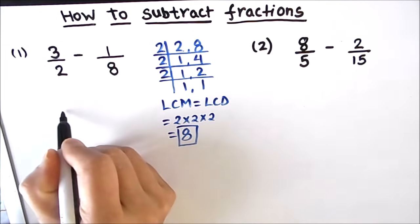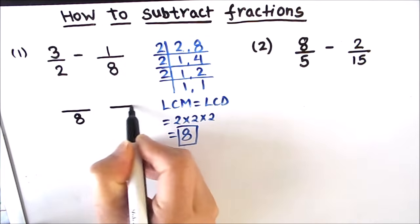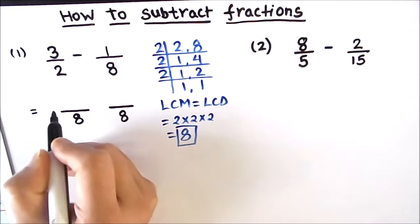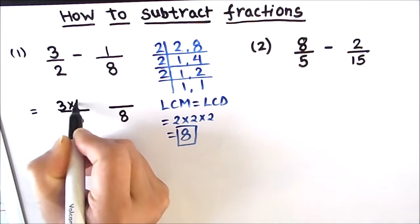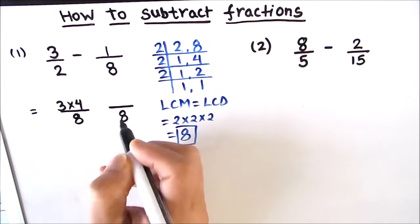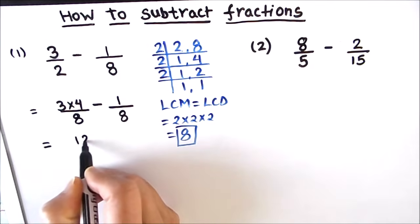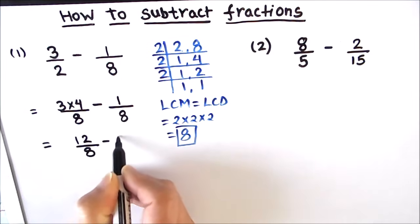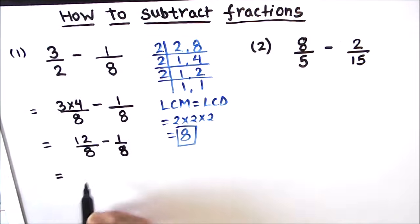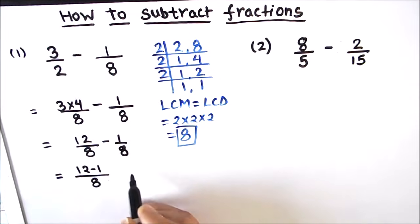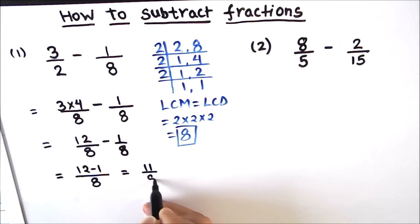Now 8 will be the common denominator for both fractions. Our denominator is 8, and since 2 times 4 is 8, we are going to multiply the numerator 3 by 4. For the second fraction the denominator is already 8, so the numerator stays as 1. So we get 12 upon 8 minus 1 upon 8, which we can write as a single fraction: 12 minus 1 upon 8, giving us 11 upon 8. Our final answer is 11 upon 8.